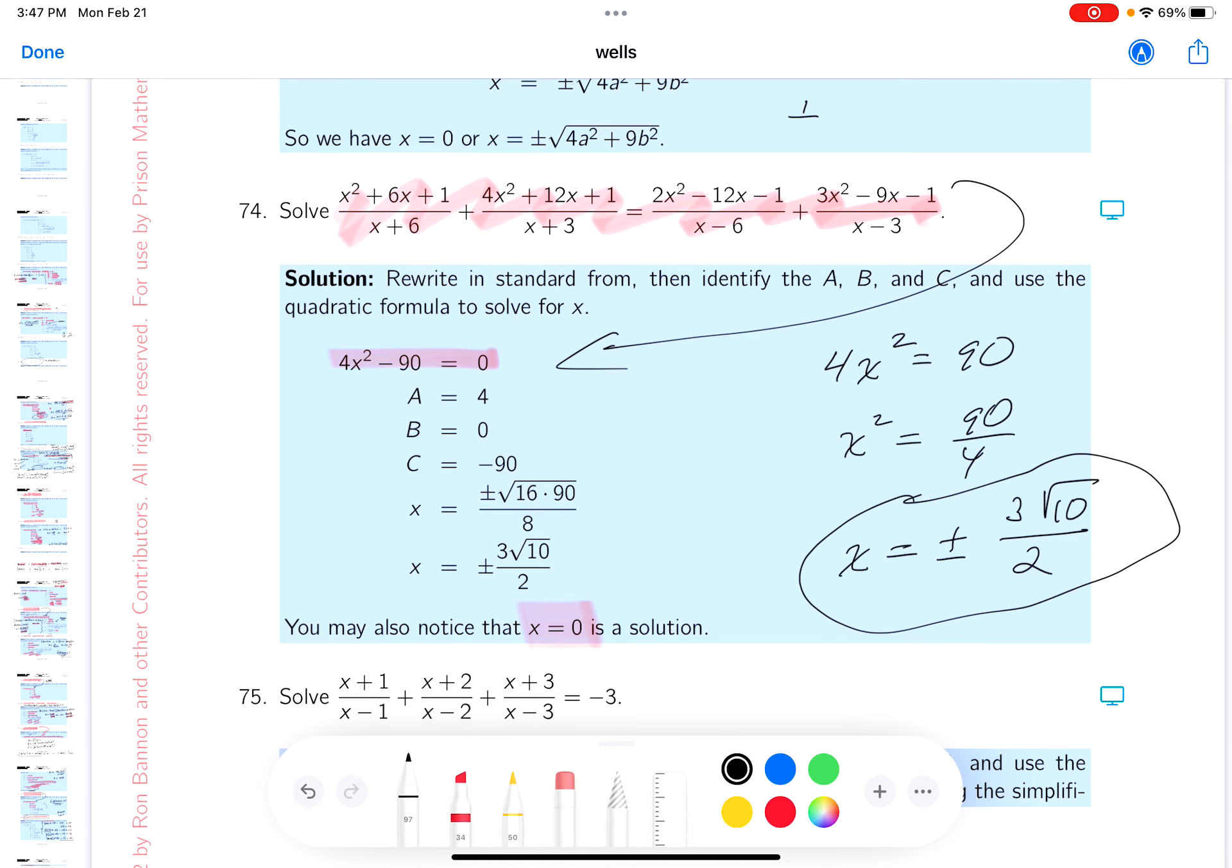By the way you get 1/6. Right, if x is 0 you get 1/3. What do you get over here? 1/6. And 1/3 clearly, 1/6 plus 1/3 is 1/6 plus 1/3, so x=0 is a solution to the problem as well.